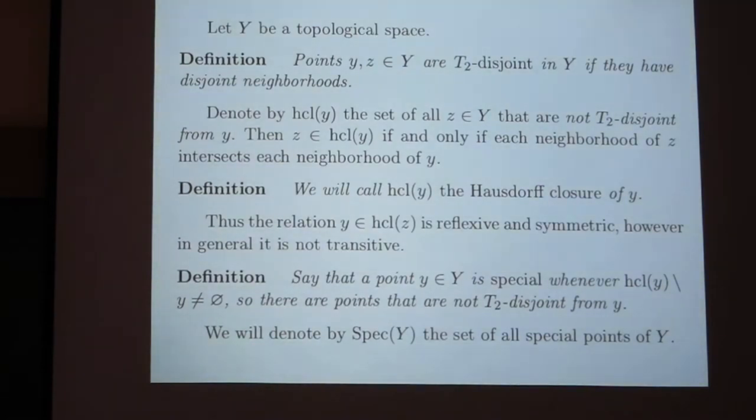Not every two points are T0-disjoint, so there are points that don't have non-intersecting neighborhoods. And if I fix one of them, say it's point y, then all points that are not T0-disjoint from y, I call the set of these points as Hausdorff closure of y.